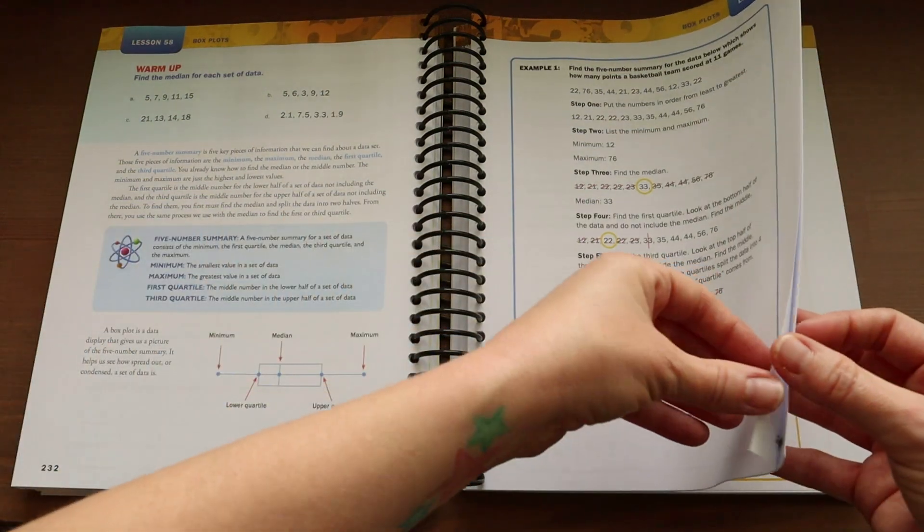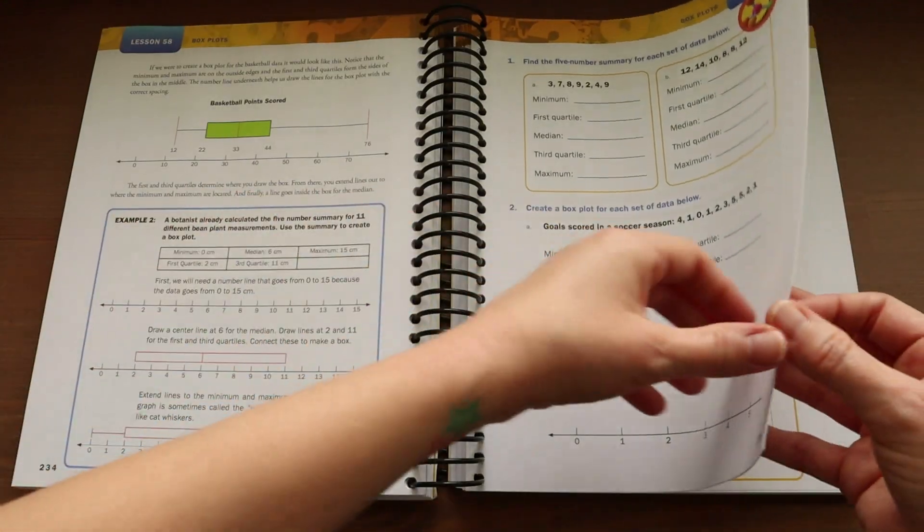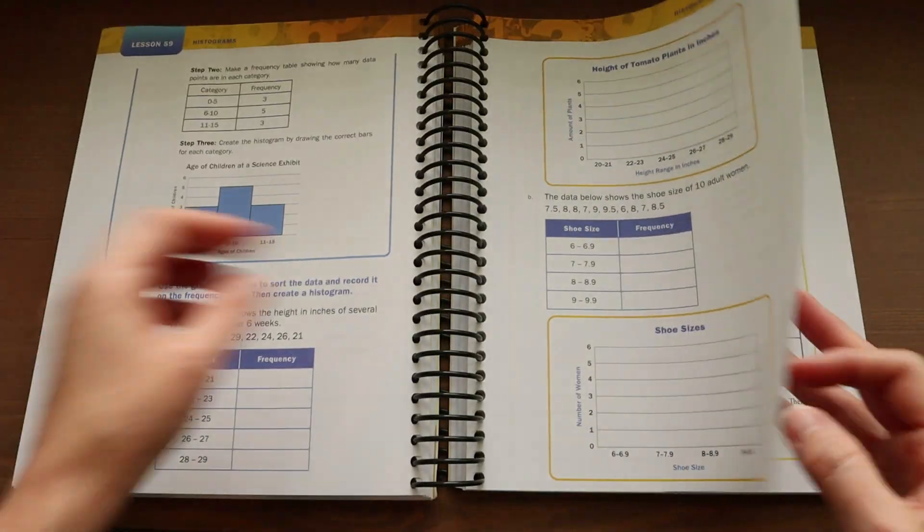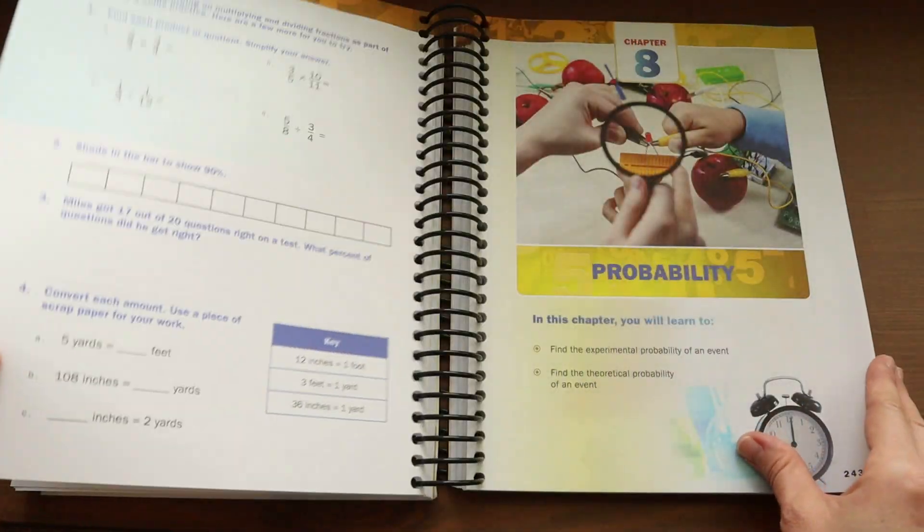There's also a sheet that gives you seven questions to ask to help develop problem solving strategies so if your child gets stuck on something as well as a suggested schedule.